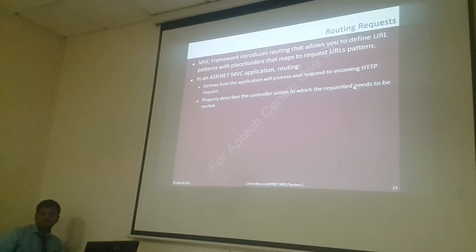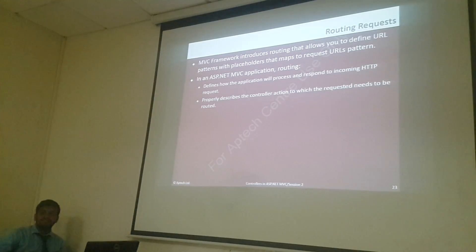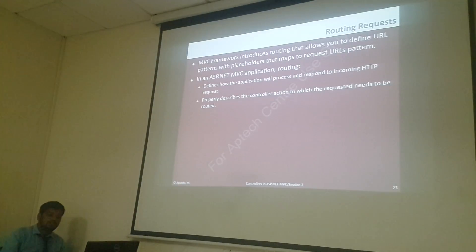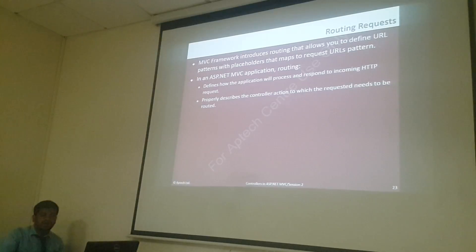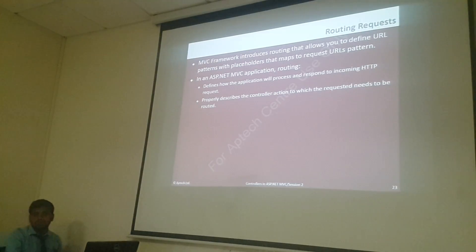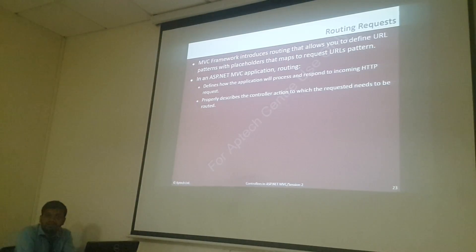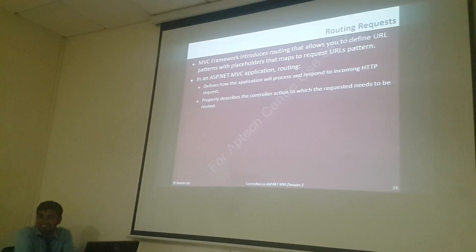Next, routing requests. Routing means — suppose if you want to configure, whenever you start the application, by default which method has to execute. Or how to execute a particular method — that is how we can monitor this. I am telling you: suppose I want to change the default method, I want to control it. Where I can change it — I can change it from RouteConfig.cs. In RouteConfig, there is controller equals Home and action equals something.